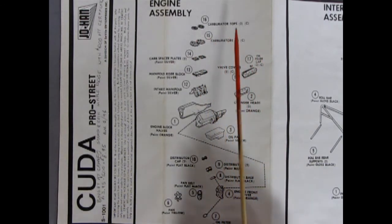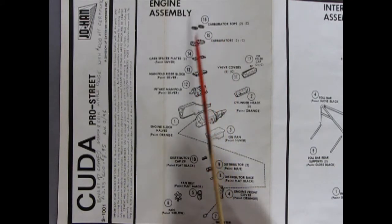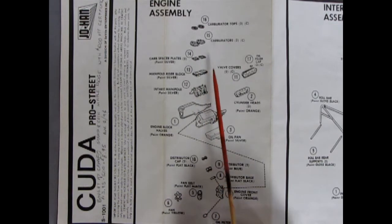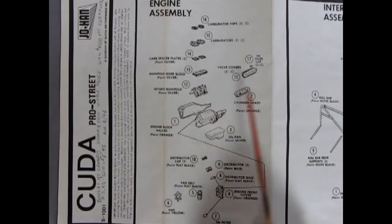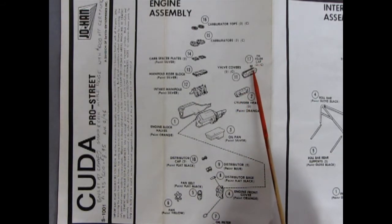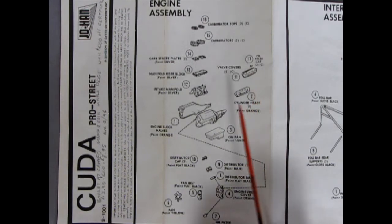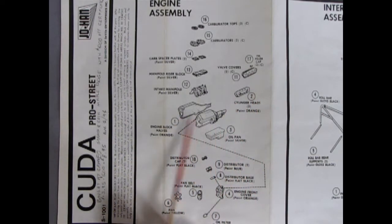There's the carburetor tops, our four barrel carburetors, the carburetor spacer plates, the manifold riser block, the intake manifold, our cylinder heads, our valve covers with the oil filler cap molded separately that you pop in, the engine blocks left and right. Also have the transmission off the back. Oil pan glues up underneath there.